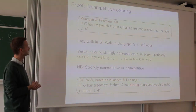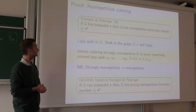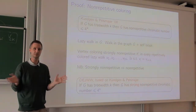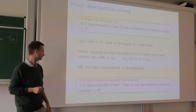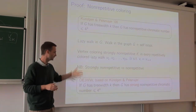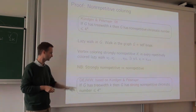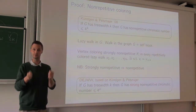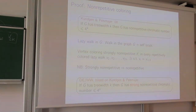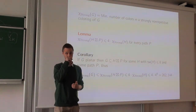The bound of 4^K for treewidth K holds even for this stronger notion — it's essentially the same proof with obvious tweaks. So this modified invariant is still bounded for bounded treewidth. The key point is that it will work nicely when you take the strong product with a path. Let chi-strong be the minimum number of colors for a strongly non-repetitive coloring. For a graph H and path P, the invariant grows by at most a factor of 4 when you take the product with a path: chi-strong(H⊠P) ≤ 4·chi-strong(H).